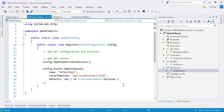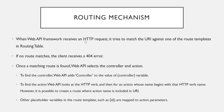Let us understand this routing mechanism in detail. Whenever the Web API framework receives an HTTP request, it tries to match the URI against one of the route templates in the routing table. If no route matches, the client will receive a 404 Not Found error. But if a matching route is found, the next step is to select the appropriate controller and its action.